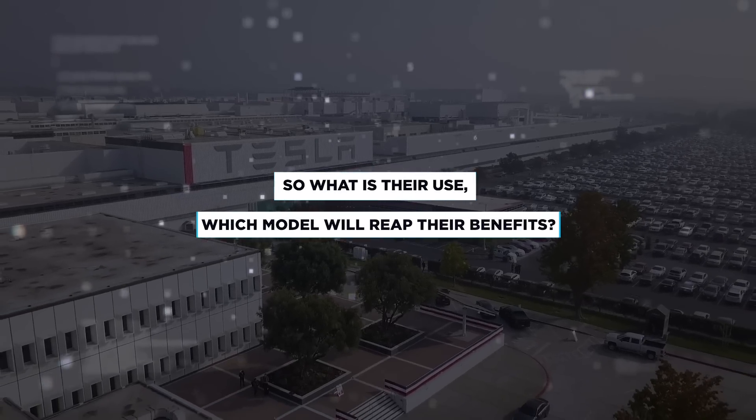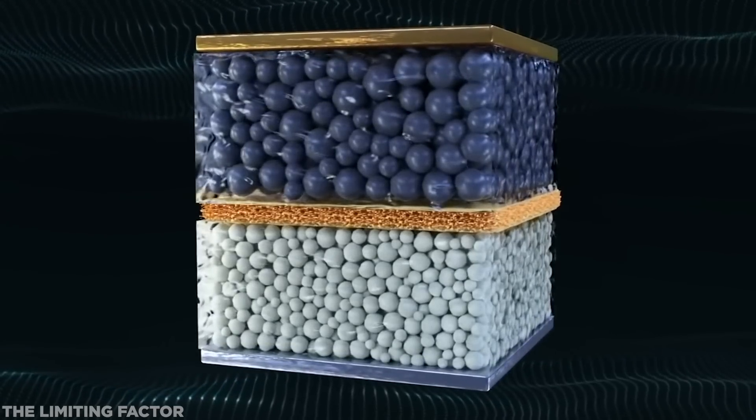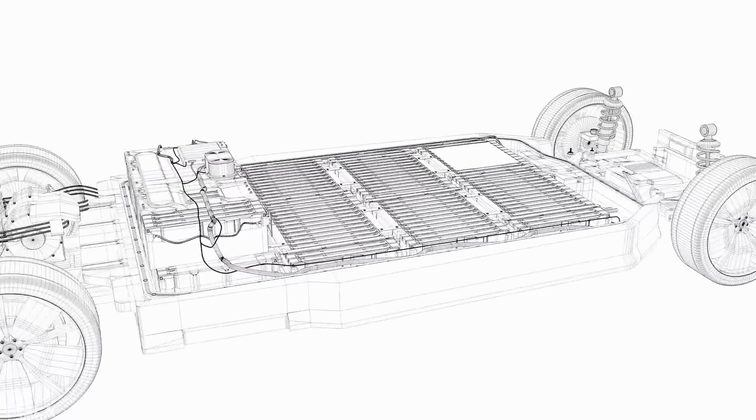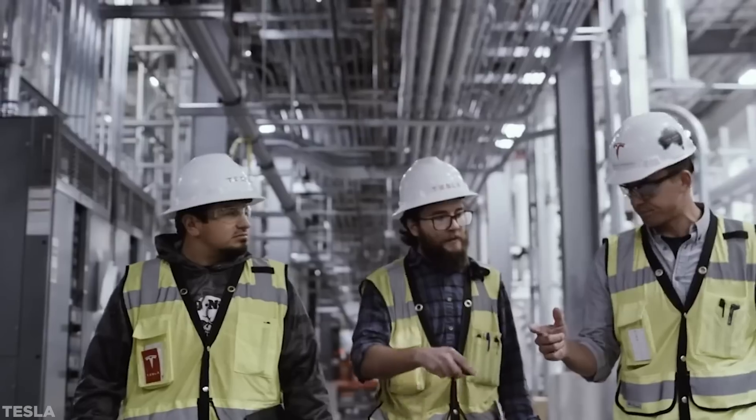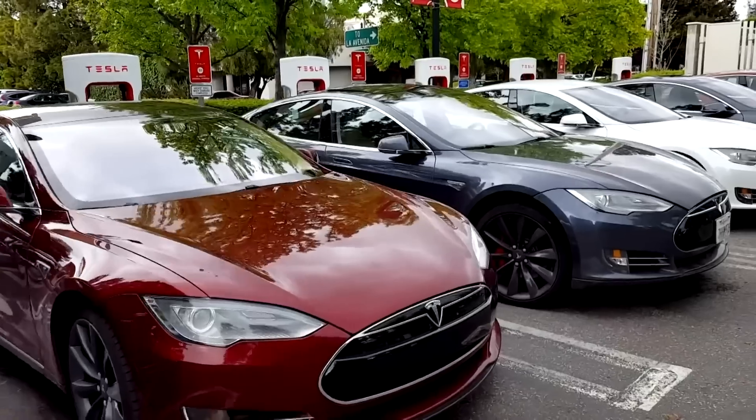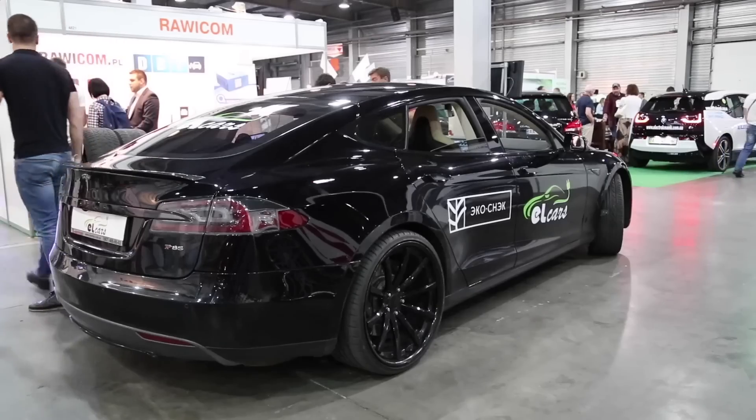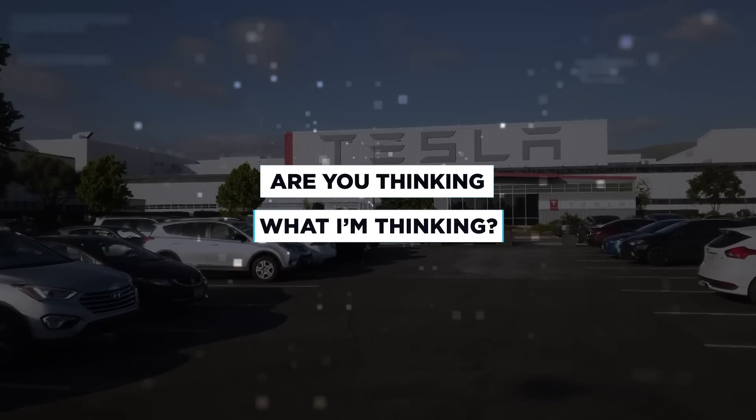So what is their use and which model will reap their benefits? A higher energy density means a smaller total volume of cells is required to achieve the same amount of miles, perfect for a smaller car. Cheaper manufacturing means the lower cost will likely be passed on to the consumer, perfect for a cheaper car. A high level of reproducibility, perfect for pushing a car out to even more people.